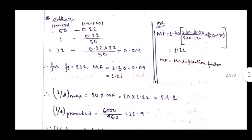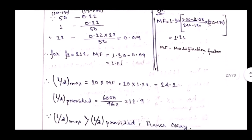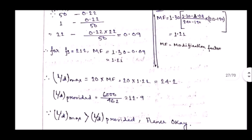So 1.21 is the modification factor for Fs 212. Now, L/D maximum for simply supported beam = 20 × 1.21 = 24.2. The L/D provided = 6000 / 462 = 12.9. Since L/D maximum (24.2) is greater than L/D provided (12.9), it is okay for deflection — the deflection check is satisfied.